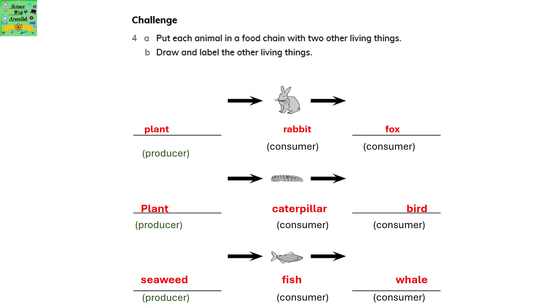Put each animal in a food chain with other living things. Draw and label the other living things. The living things already given are a rabbit, caterpillar, and fish. The first food chain: plant (producer) is eaten by the rabbit (consumer), then a fox eats the rabbit (also a consumer). Next, caterpillar eats the plant, then a bird eats the caterpillar. Fish eats the seaweed and a whale eats the fish.